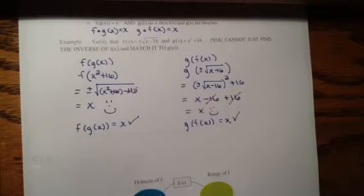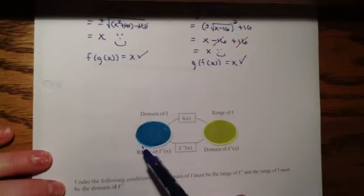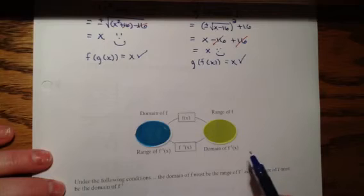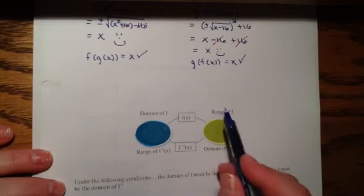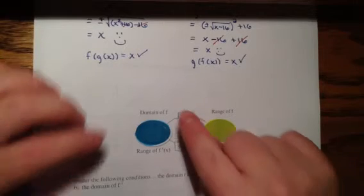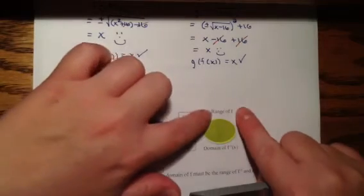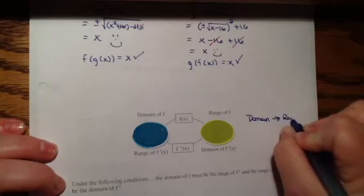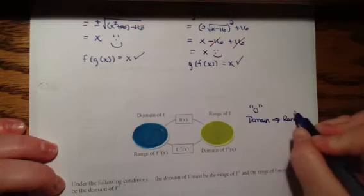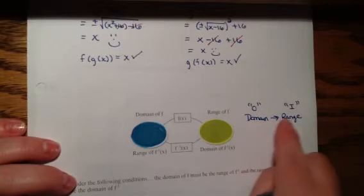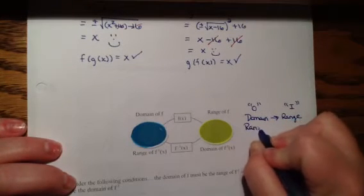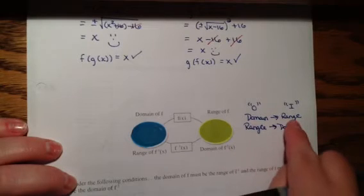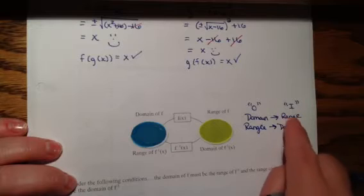Now let's talk about some fun facts of inverses. If I have some function f and this blue circle is its domain, all of the domain of f is going to become the range of the inverse, and the range of f is going to become the domain of the inverse. So the domain of the original becomes the range of the inverse, and the range of the original becomes the domain of the inverse. If you know the range of the inverse, you know the domain of the original, and vice versa.